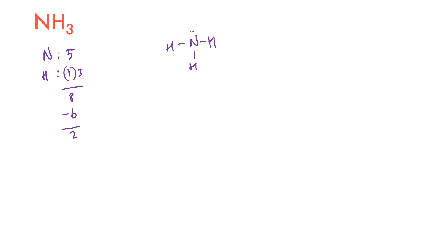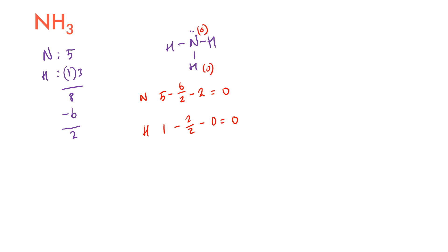Looking at the formal charges: for nitrogen, group number 5 minus 6/2 (bonding electrons) minus 2 (lone pair electrons) gives 5 minus 3 minus 2 equals 0. For each hydrogen, group number 1 minus 2/2 (bonding electrons) minus 0 (no lone pairs) gives 0. All formal charges are 0.